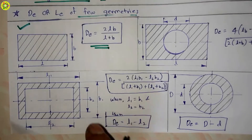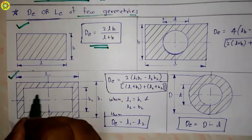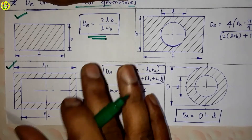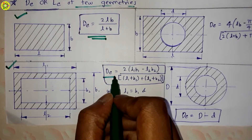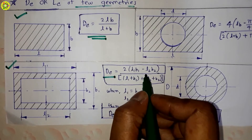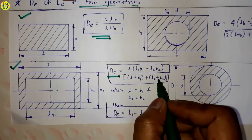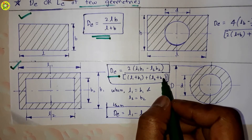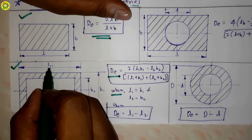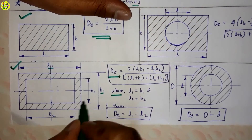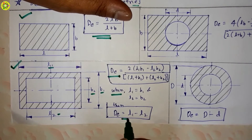The derived formula for the rectangular duct is: de = 2lb / (l + b). The next geometry is the rectangular annulus. For this, the equivalent diameter is: de = 2(l1·b1 − l2·b2) / [(l1 + b1) + (l2 + b2)]. When l1 = b1 and l2 = b2, the formula simplifies to de = l1 − l2.